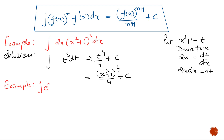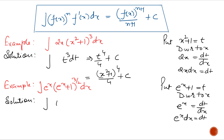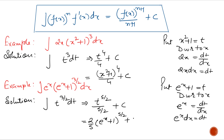Next example: integrate eˣ multiplied by (eˣ + 1)^(3/2) with respect to x. The derivative of (eˣ + 1) is eˣ. So put eˣ + 1 = t. Differentiating with respect to x both sides: eˣ = dt/dx, so eˣ dx = dt. Replace in the question to get t^(3/2) dt. The answer is t^(5/2) / (5/2) + c. Replace t by eˣ + 1, so the answer is (2/5)(eˣ + 1)^(5/2) + c.